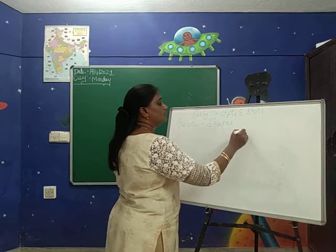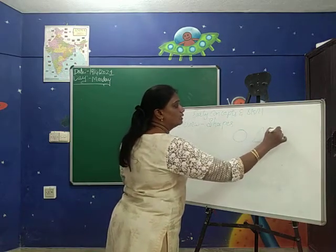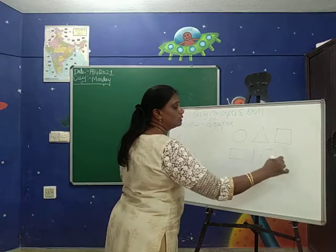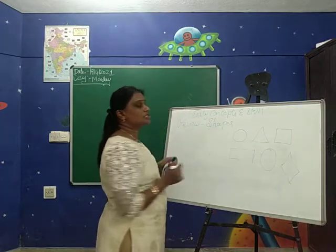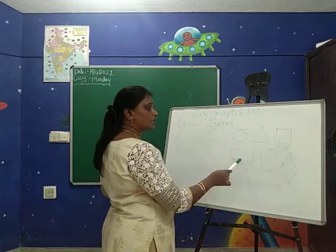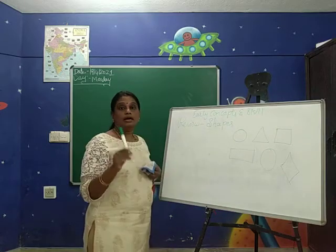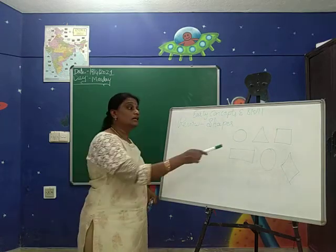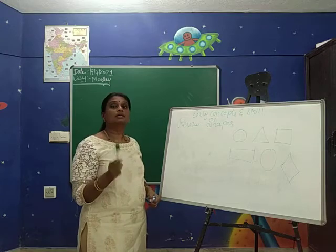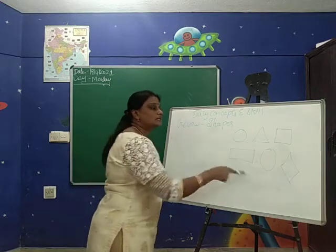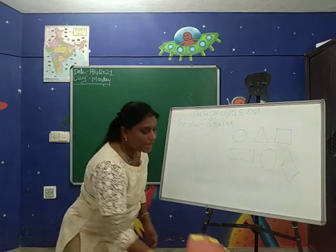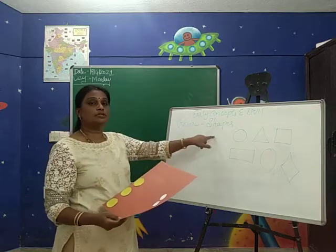Once again, the shapes we have learned are: circle, triangle, square, rectangle, oval, and diamond. When I ask in the assessment, you have to tell the shape along with an example. You have to give one example for all these shapes. I will ask you questions. Next, we shall do one activity on the shapes review.